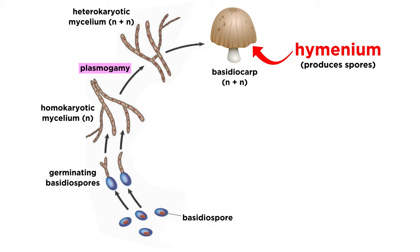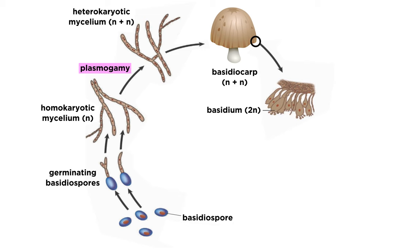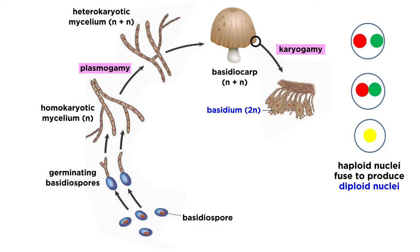Along the hymenophore of a basidiocarp, there is the spore-producing tissue called the hymenium. Coprinus comatus has a gilled, or lamellate, hymenophore, and along the sides of those gills is the spore-producing hymenium. Currently, Coprinus comatus has a heterokaryotic mycelium with two unique nuclei. In order to produce spores, the hymenium needs to develop spore-bearing structures called basidia. The two unique nuclei within cells along the hymenium fuse into a single diploid nucleus through a process called karyogamy.